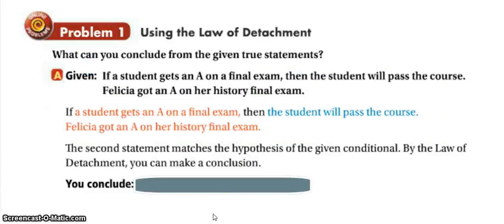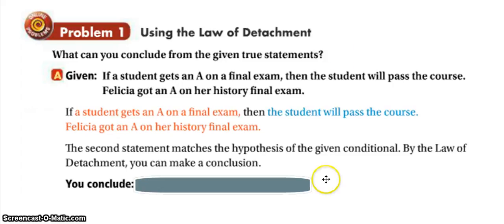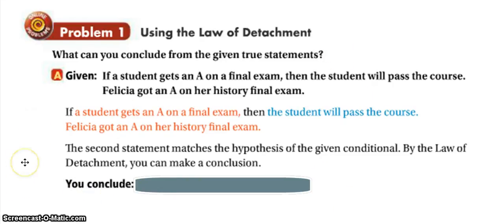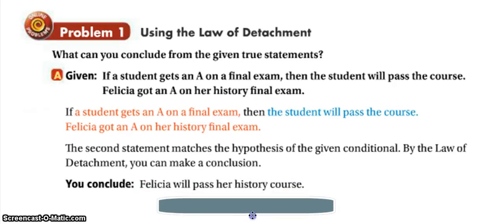The first problem on SuccessNet uses the law of detachment so we can break apart the hypothesis and the conclusion. Our conclusion should be that Felicia will, in fact, pass the course, because if she got an A on the final, then she must pass the course.